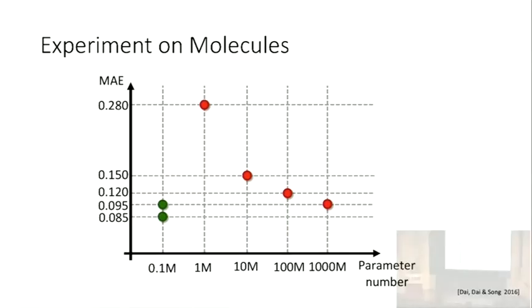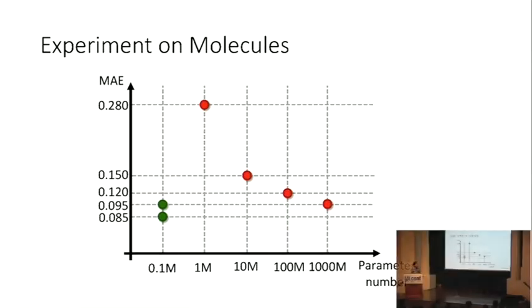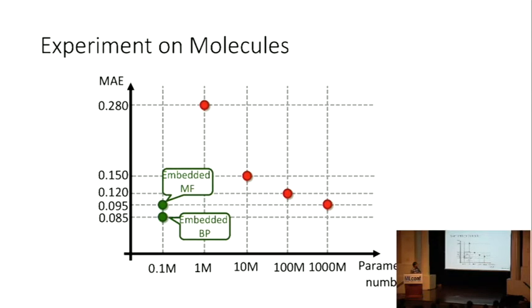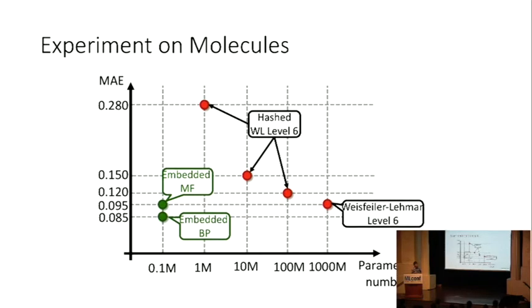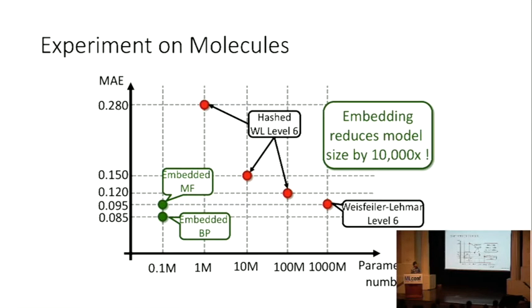Also, there's a trade-off between your model size versus your performance. In this figure, the horizontal axis represents your model size, which equals to the number of parameters. The vertical axis represents your mean absolute error, and the lower the better. Our approach is here. If you simply use some graph kernel, you will get something here, which is a very large model. If you apply some hashing to reduce the model size, you will suffer from the poor performance. In other words, the embedding methods can get a much compact model and at the same time improve the performance.